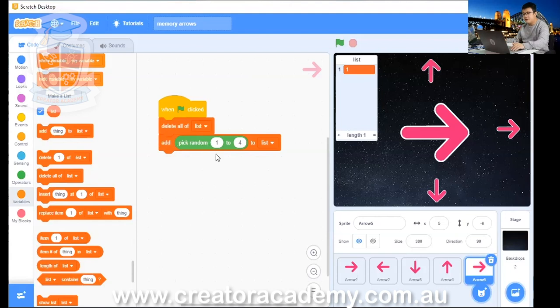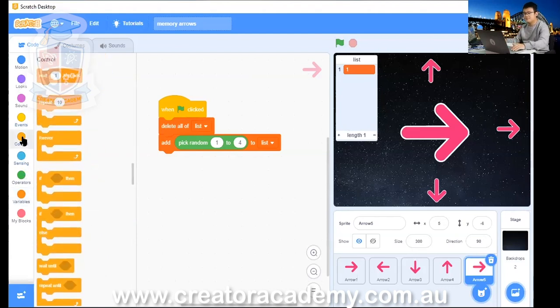So now we have to add three random numbers to the list. We need to use a repeat block, or a loop, and make sure that we repeat it exactly three times. So we go into Control, and then we go Repeat 10, change it to Repeat 3.